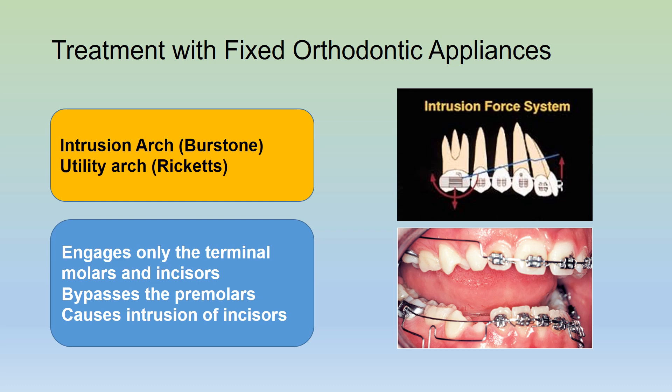Fixed appliances can also be used to treat deep bites using either an intrusion arch — the Burstone intrusion arch or the Ricketts utility arch. The principle is that these arches engage only the terminal molars while the incisors and premolars are bypassed, bringing about intrusion of the incisors and thus reducing the deep overbite.